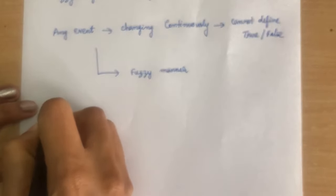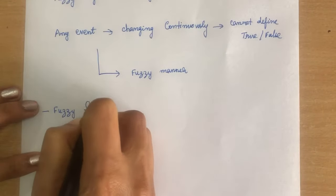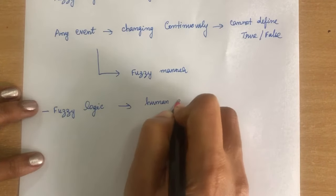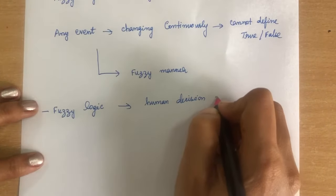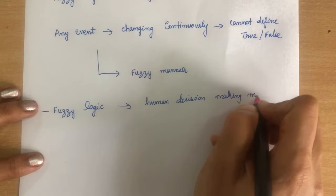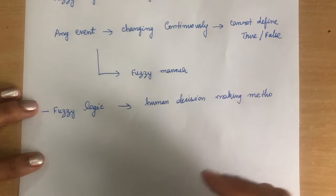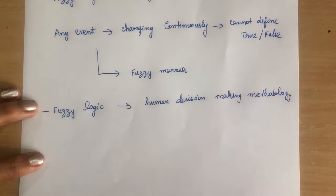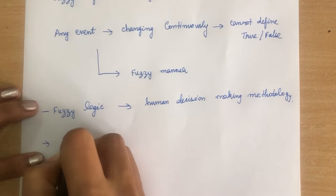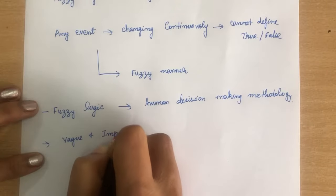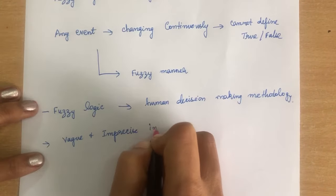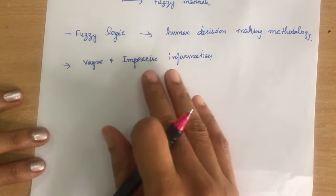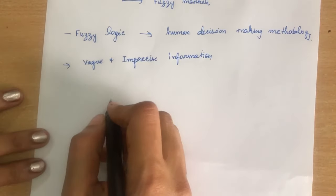Fuzzy logic resembles human decision-making methodology — how humans think. We are going to solve problems using human decision-making methodology in fuzzy logic. It deals with vague and imprecise information. If the information is imprecise or incomplete, we can easily solve those problems using fuzzy logic.